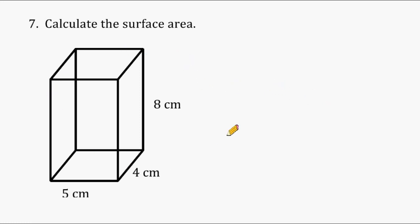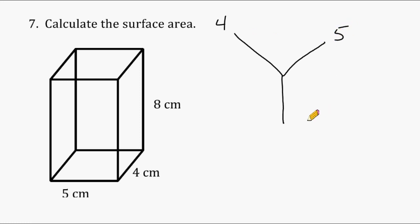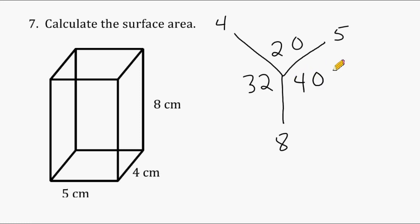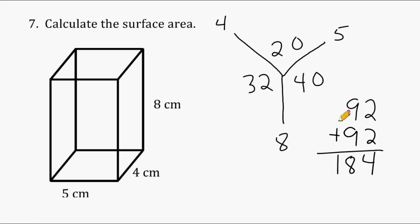We have a rectangular prism here, and I'm going to use the Y method. We have three dimensions: a length, width, and height of 4, 5, and 8. A 4 by 5 rectangle gives an area of 20, a 4 by 8 rectangle gives 32, and a 5 by 8 rectangle gives 40. Adding these: 40 plus 20 is 60, and 60 plus 32 is 92. This represents half of our surface area, so we double it to get 184 square centimeters.